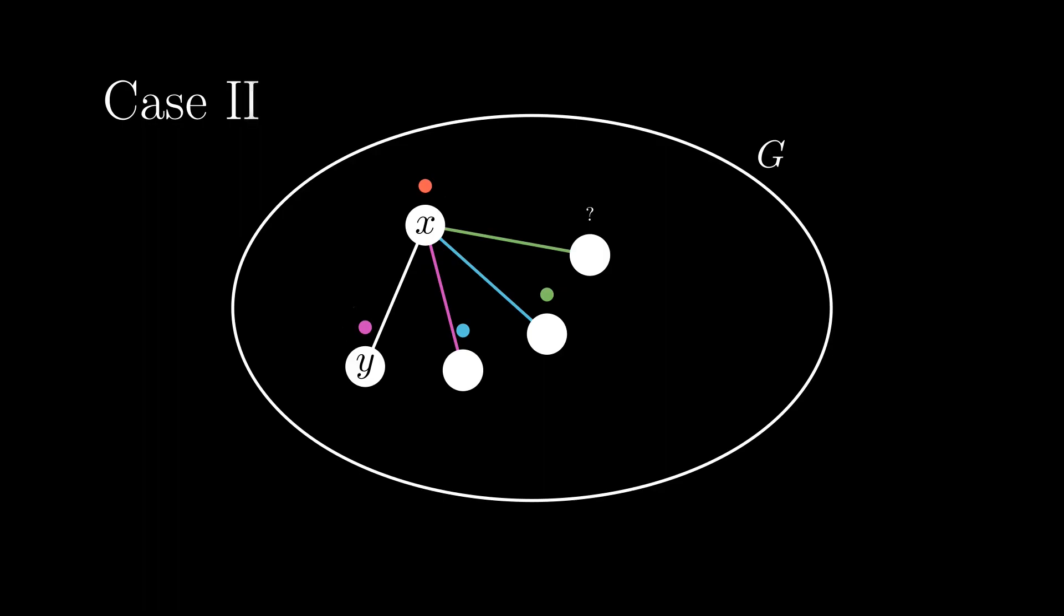Case 2 is that the free color of the last vertex is a color of an edge from x that we've seen before. This is unfortunate, since we're now stuck in a loop and can't use the previous trick.